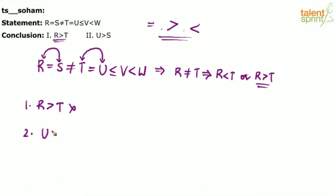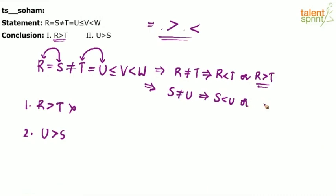The second conclusion says U greater than S. From the statement, S is not equal to T, which implies S is not equal to U. If S is not equal to U, then U is either greater than S or less than S — both are possible. So U greater than S is possible but not definite. Independently, both conclusion 1 and conclusion 2 are false.